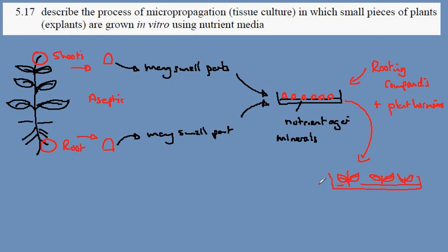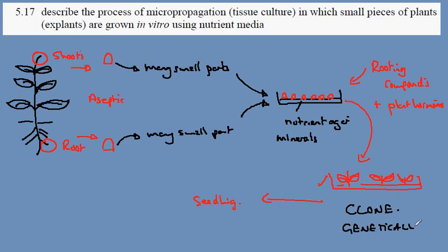Each of these can then be grown on into a seedling. Notice that in the process of doing so, we create many copies of the original plant — this is our clone. They are genetically identical, and they will therefore have the same characteristics as our original plant.